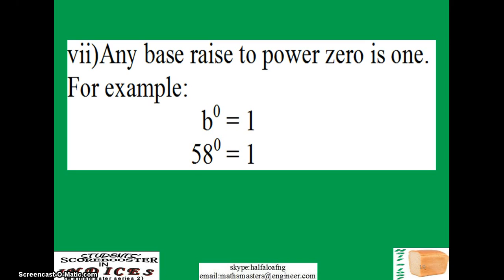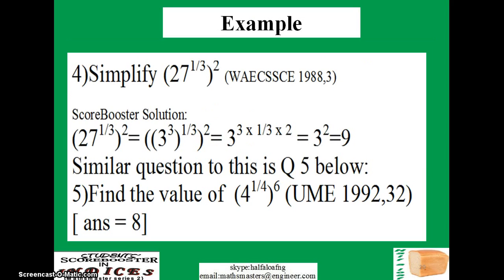Another very important rule: whenever you come across anything raised to power 0, it equals 1. For example, b raised to power 0 is 1; 58 raised to power 0 is 1; one million raised to power 0 is 1. Take note of this. Now let's look at some examples.